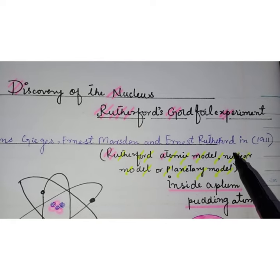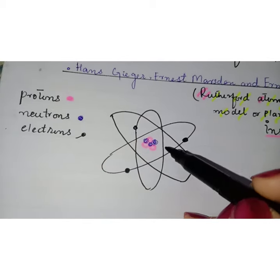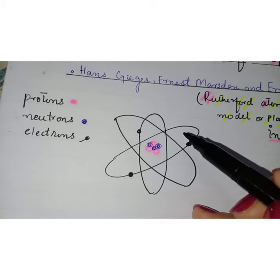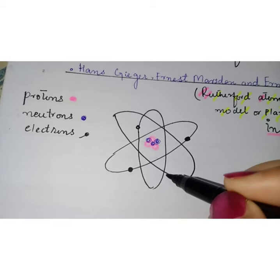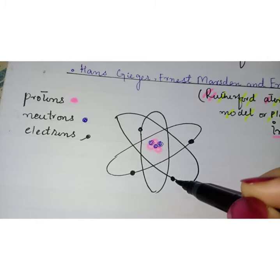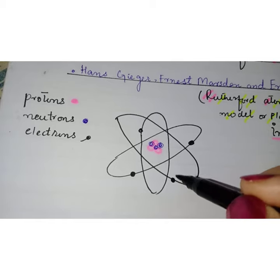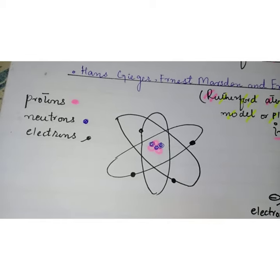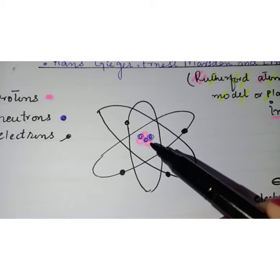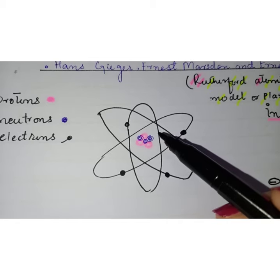This experiment is also known as Rutherford's atomic model, nuclear model, or planetary model. This is how we think of atoms today, with electrons on the outside and in the middle a dense hard nucleus where the protons and neutrons live.